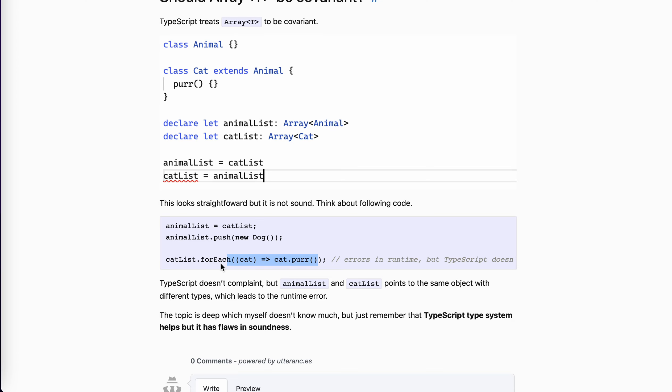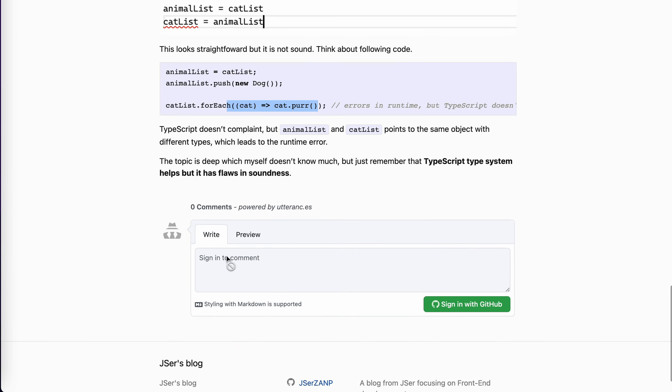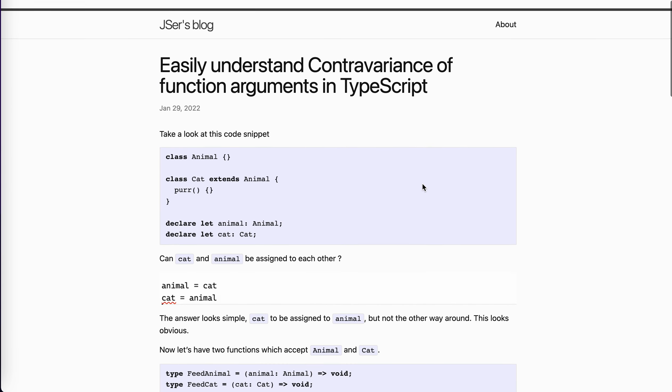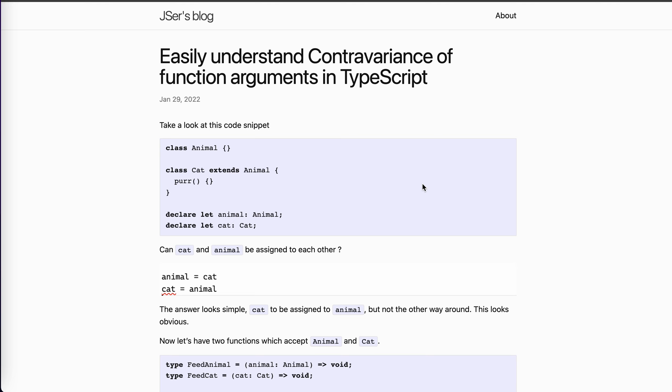So this topic is very deep. I don't want to expand too much because I don't know either. So it's pretty alien to me as well, but just remember that TypeScript type system helps us, right? Like JavaScript applications, but it has flaws in soundness. It's just like a nice balance between the soundness and easy to use, right? If this makes it too strict, TypeScript won't be adopted, like so popular among the front end developers. Yeah, because we must compromise. So that's it. So hope it helps. It's very interesting. Contravariant, covariant. It's very fancy word to talk about. Cool. See you next time. Bye bye.